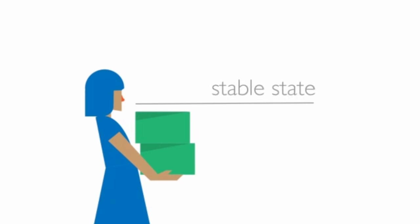An analogy is a person carrying boxes. If you try to carry too many boxes, you'll end up dropping some. And if you continue, you'll keep dropping boxes until you reach a manageable amount. This is your stable state.